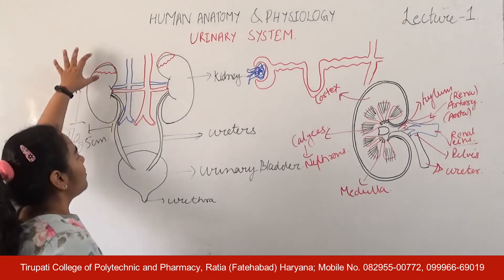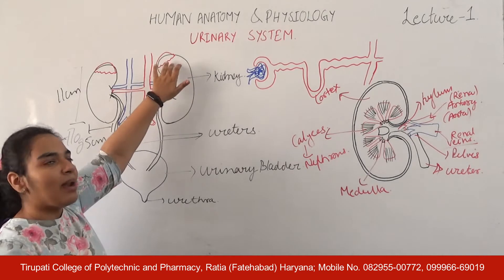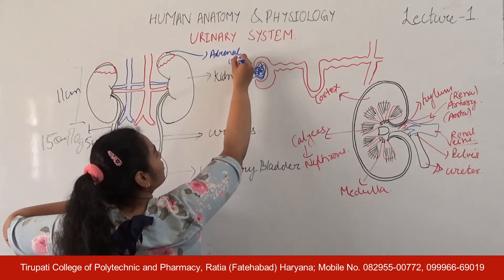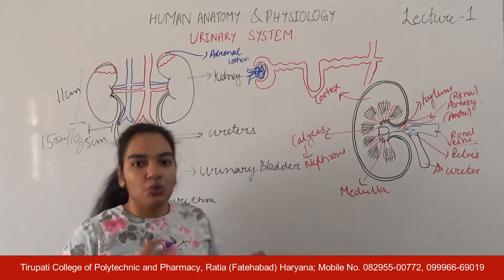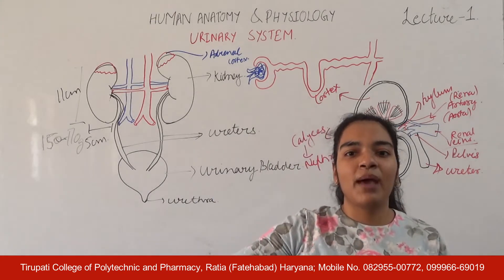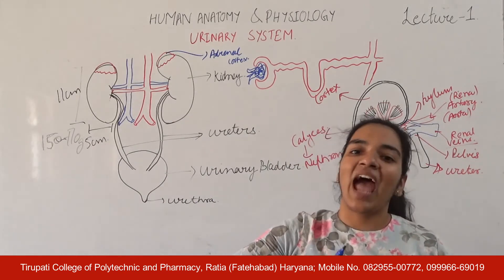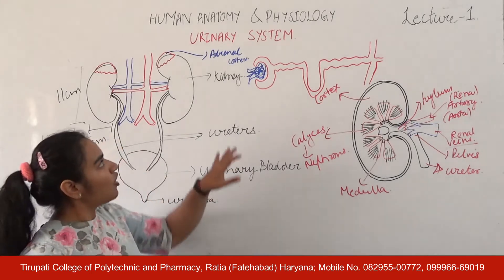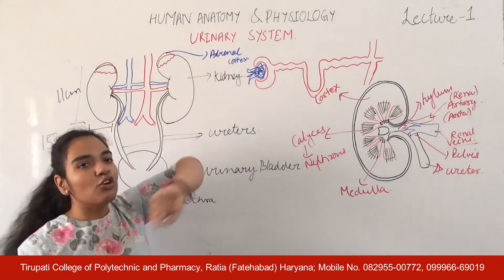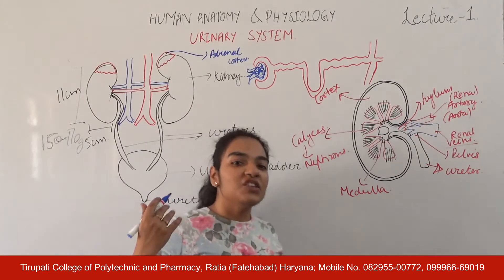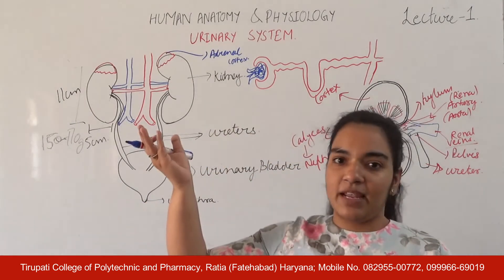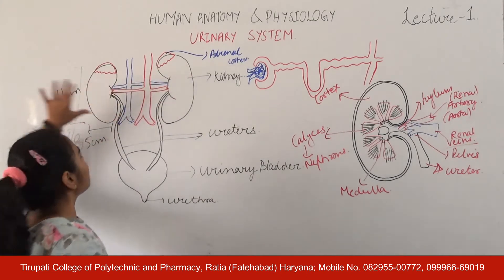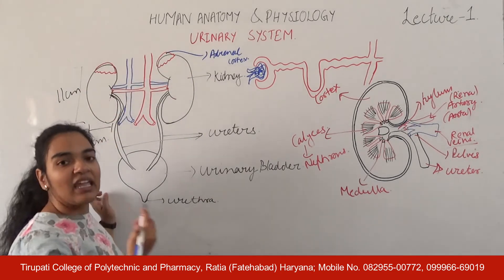We also have two glands present on top of the kidneys. We have hormones that are responsible for maintaining ionic balance in our body. One of these hormones is cortisol. These cortisol hormones are released from the adrenal cortex or adrenal glands. The adrenal glands are present on top of the kidneys.